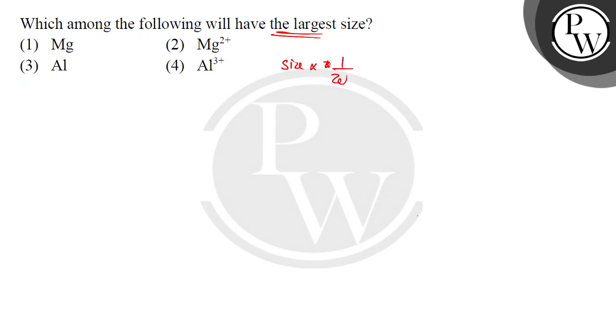Size is inversely proportional to effective nuclear charge. Effective nuclear charge equals nuclear charge minus sigma, the screening constant, which represents inter-electronic repulsion.